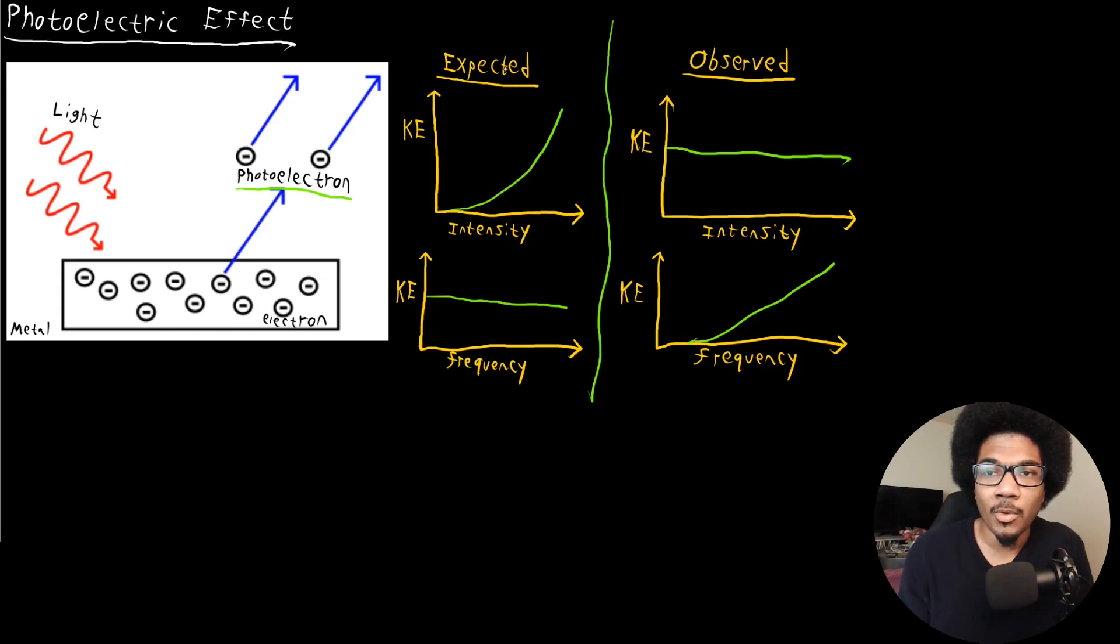We have what was expected from classical mechanics, and on the right-hand side, we have what was observed. On this first plot in the top left, this is the kinetic energy plotted with respect to the intensity of the radiation. And the intensity of the radiation from classical mechanics is proportional to the amplitude of the wave or the intensity of the light.